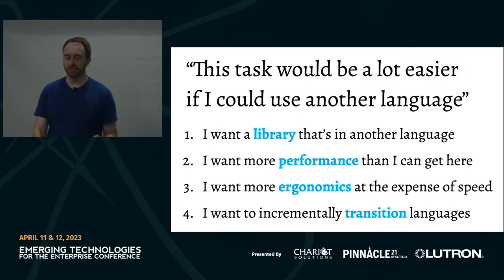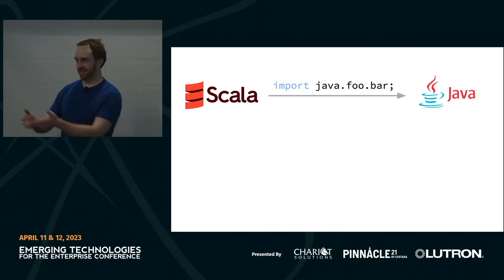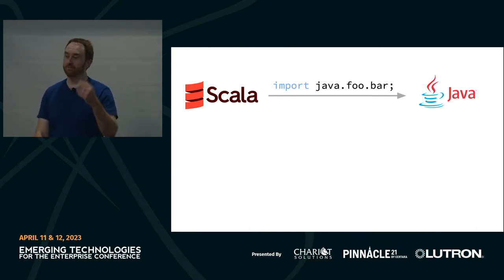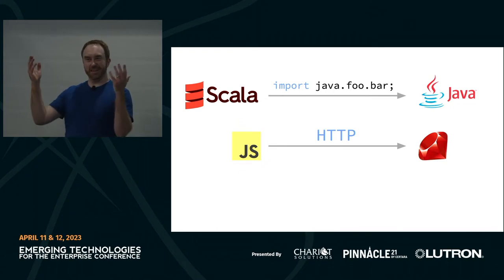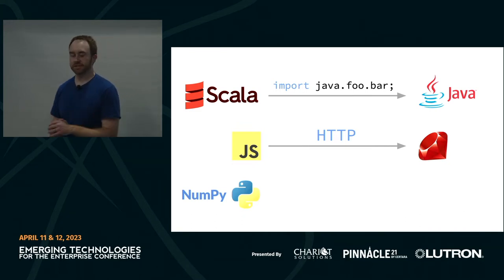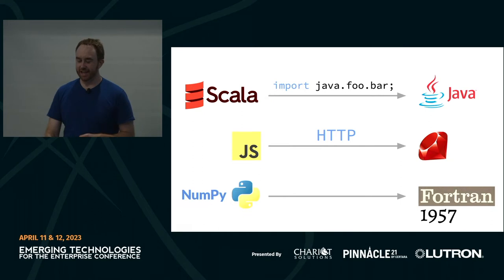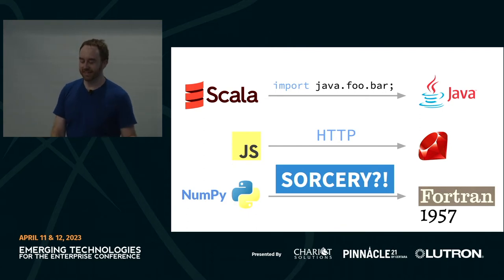In the past I've had different experiences calling functions across languages. I used to write Scala, and calling a Java function from Scala was super easy — just import the Java thing and call it. I also wrote JavaScript calling Ruby on a server, which was easy using HTTP over the network. Here's one that nobody in this room has probably done: NumPy, a popular Python package, has high-performance linear algebra routines written in Fortran — a language from 1957. By the end of this talk, you'll understand how that's possible and it's not actually sorcery.